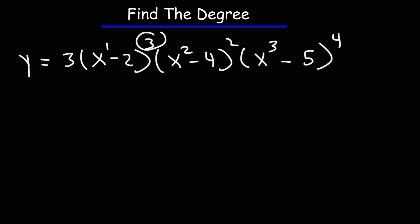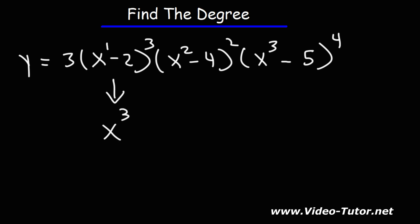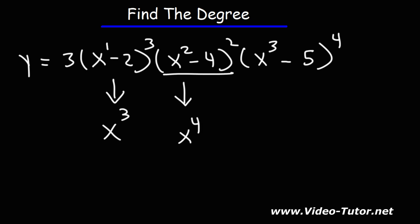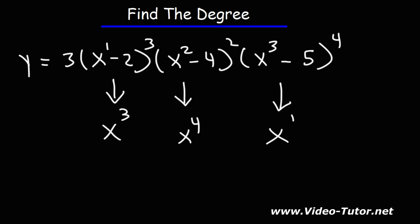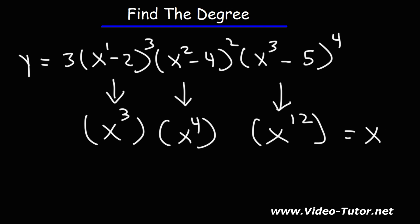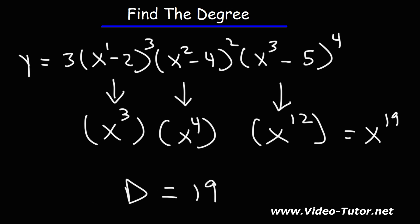For the first factor, x to the first raised to the third: 1 times 3 is 3, so the highest term is x cubed. For the next, x squared raised to the second power: 2 times 2 is 4, giving x to the fourth. For the last, x cubed raised to the fourth: 3 times 4 is 12, giving x to the twelfth. Now multiplying these together by adding the exponents: 3 plus 4 is 7, and 7 plus 12 is 19. So this polynomial has a degree of 19.